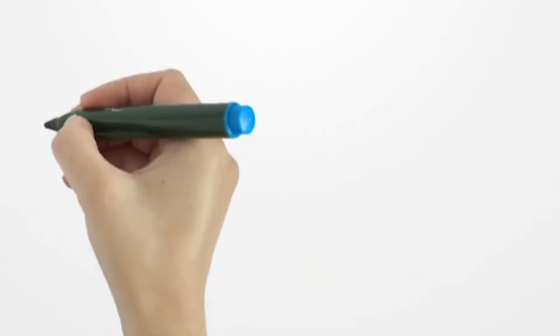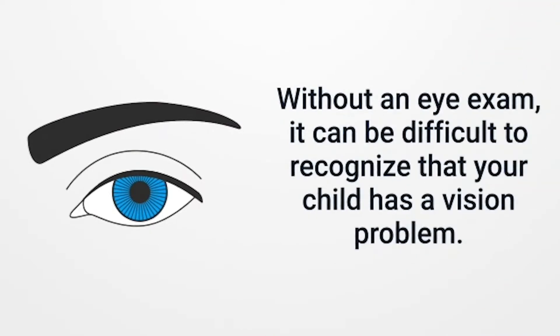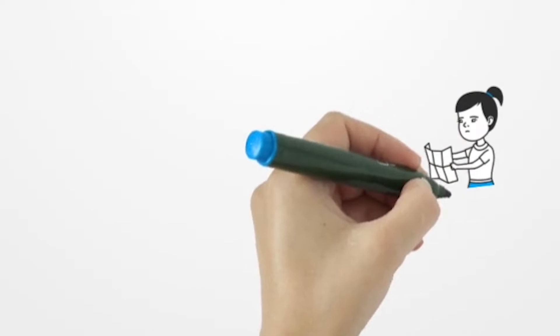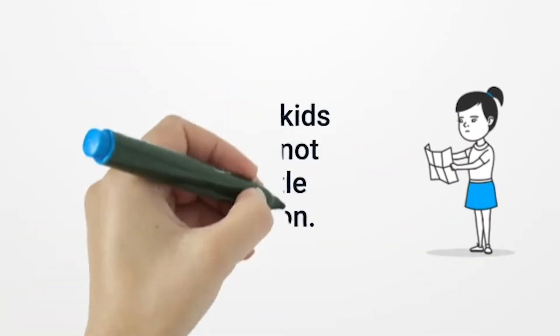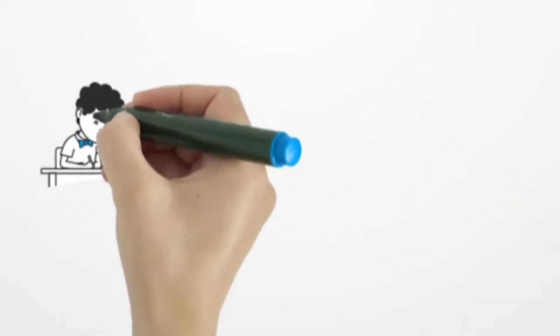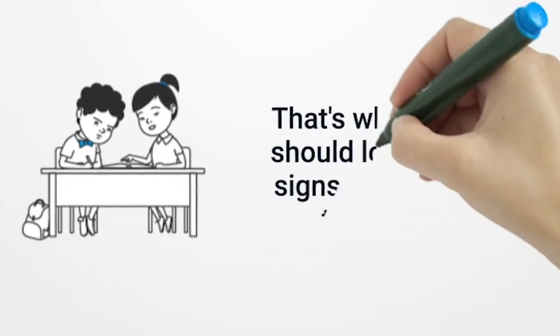Without an eye exam, it can be difficult to recognize that your child has a vision problem. It's common for kids with myopia to not notice subtle changes in their vision, especially if they've been dealing with a vision problem for a long time. For this reason, kids may not mention vision changes to their parents.